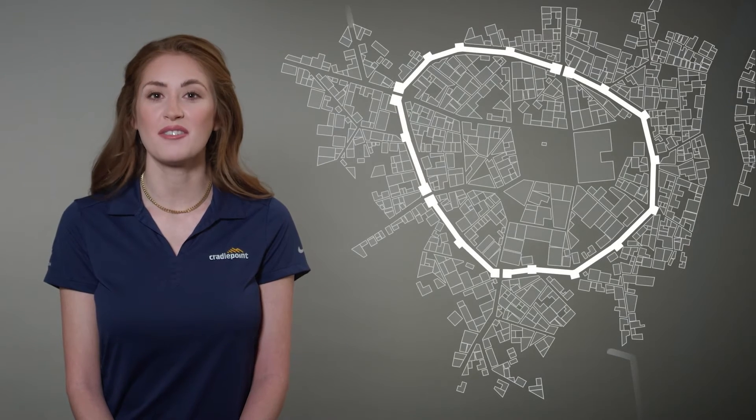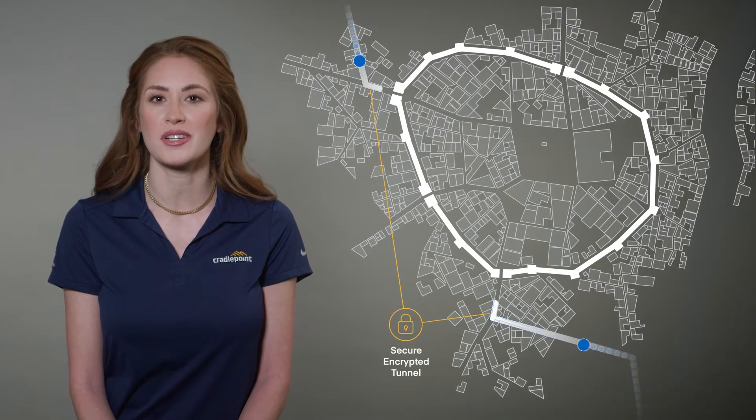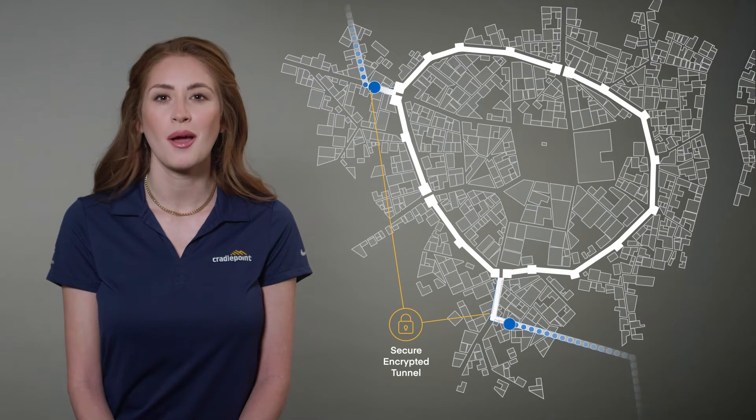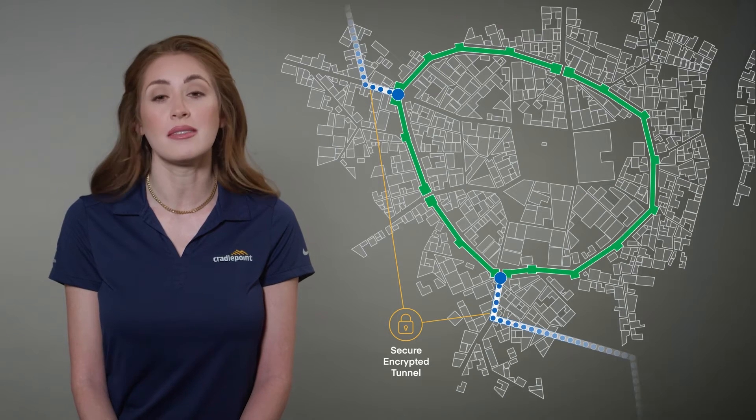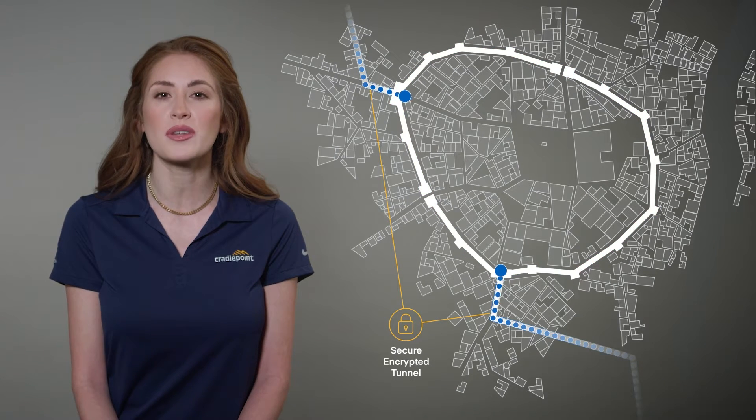To explain Zero Trust Network Access, or ZTNA, it's helpful to quickly review Virtual Private Networks, or VPNs — another security model used for remote access that has been a corporate standard for decades. In a traditional setting, VPNs act like a moat surrounding a castle, where after verification and the moat is crossed, nearly everything within the network perimeter is accessible.